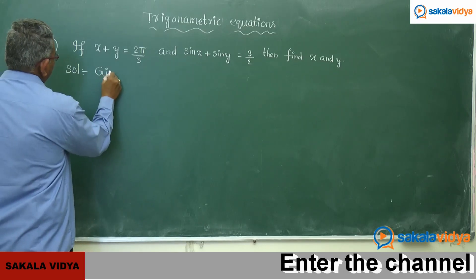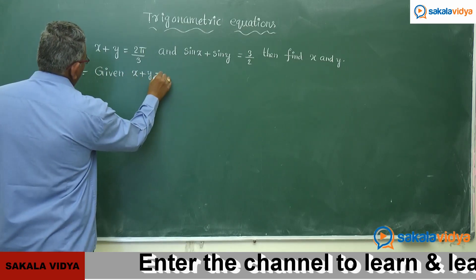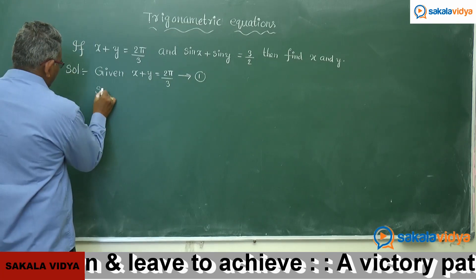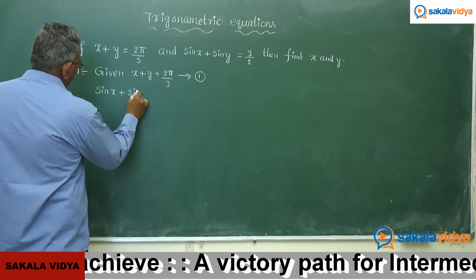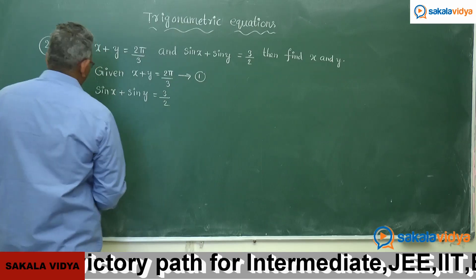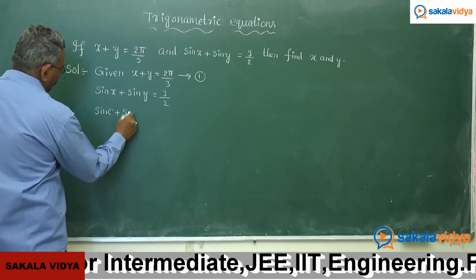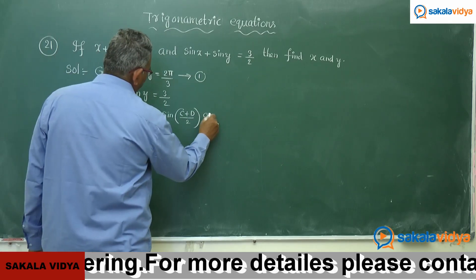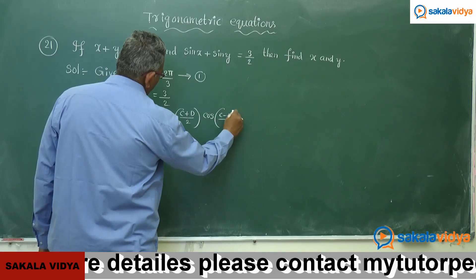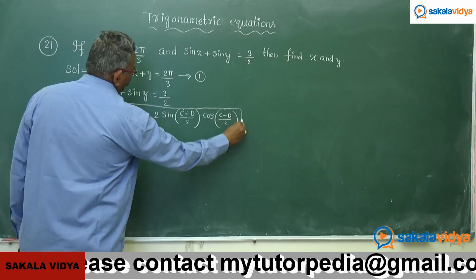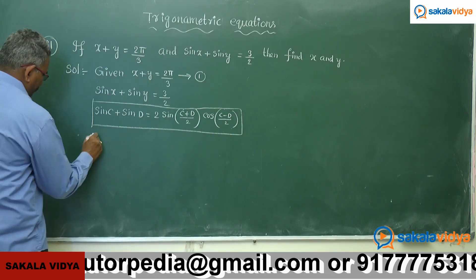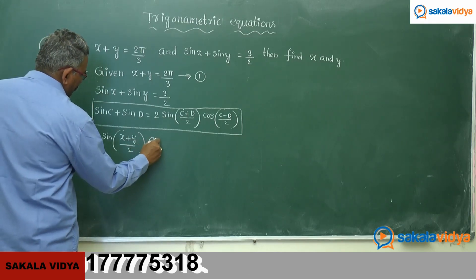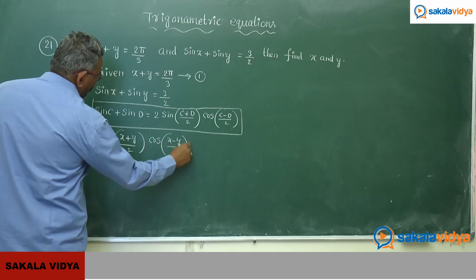Given: x plus y equals 2π/3 — this is equation 1 — and sin x plus sin y equals √3/2. We apply the formula: sin C plus sin D equals 2 sin((C+D)/2) cos((C-D)/2). So sin x plus sin y can be written as 2 sin((x+y)/2) cos((x−y)/2), which equals √3/2.